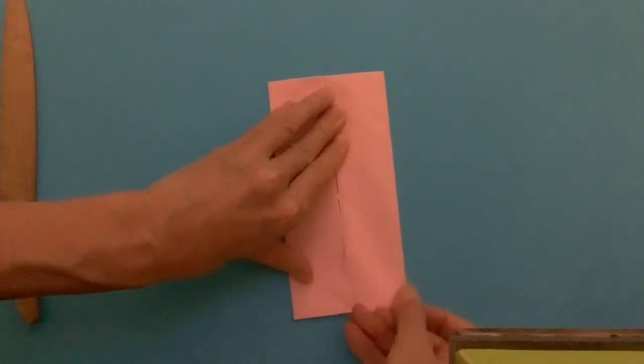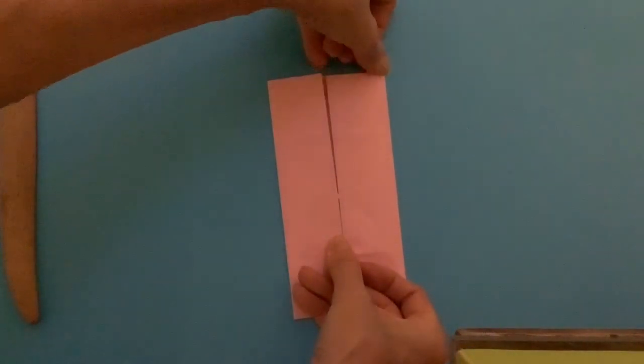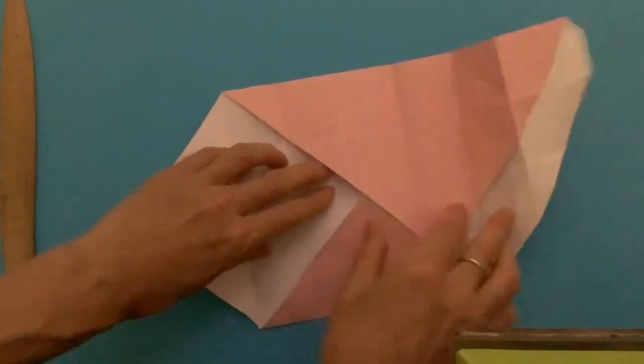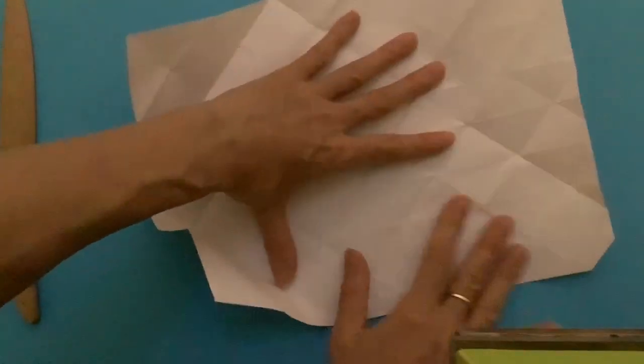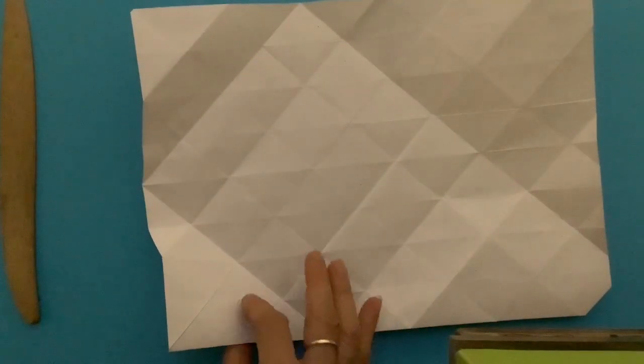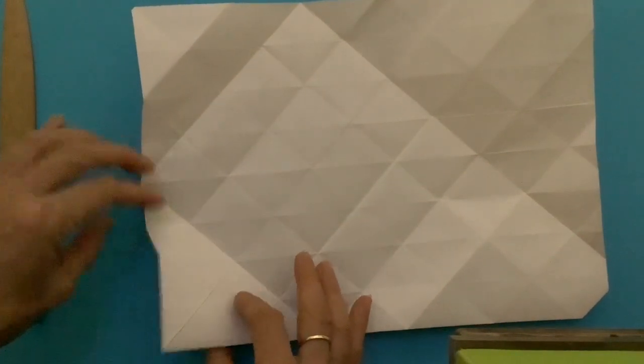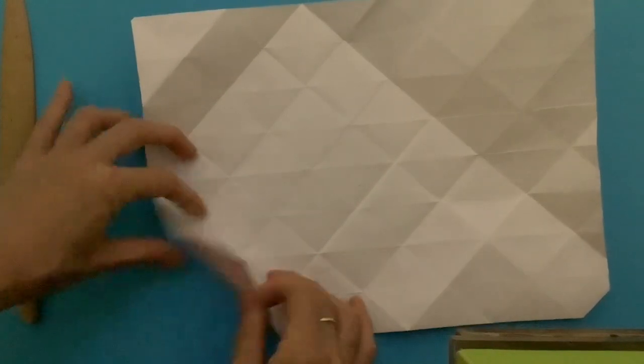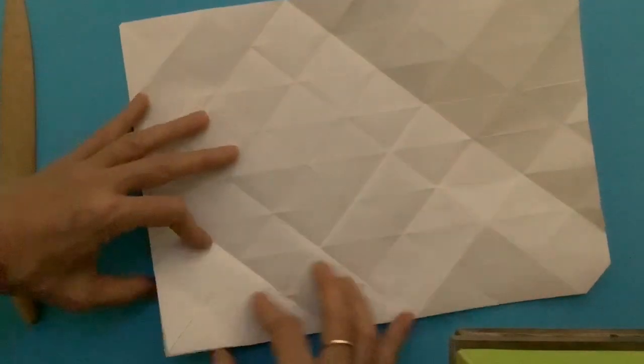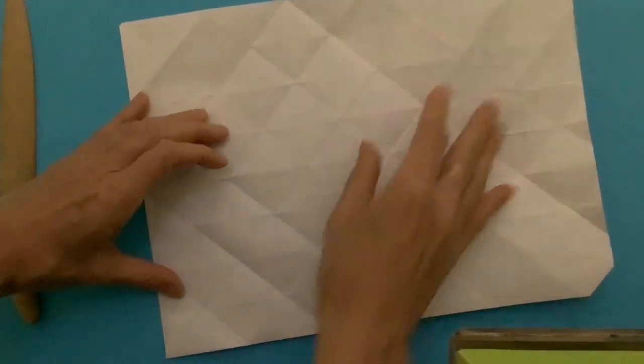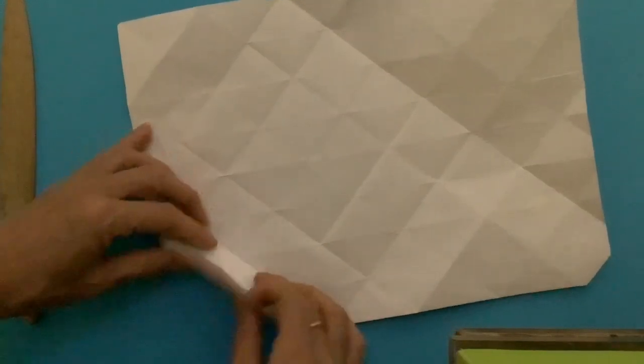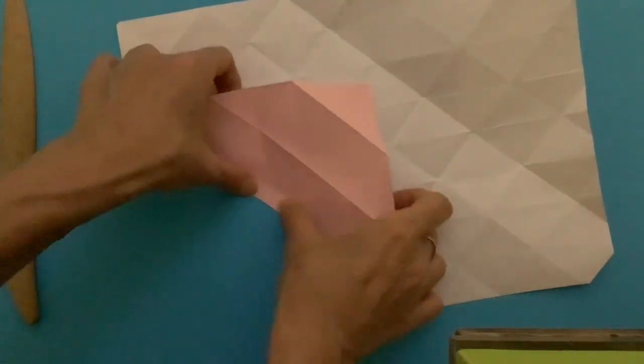Nice and even unfold the entire origami. And we will work on mountain fold and valley fold. From this side, the diagonal line is all valley. It's the opposite.